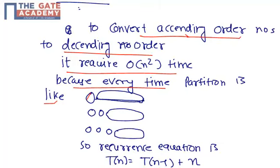partition is like 1 element, n minus 1 element, 2 elements, n minus 2 elements, 3 elements, n minus 3 elements like this.